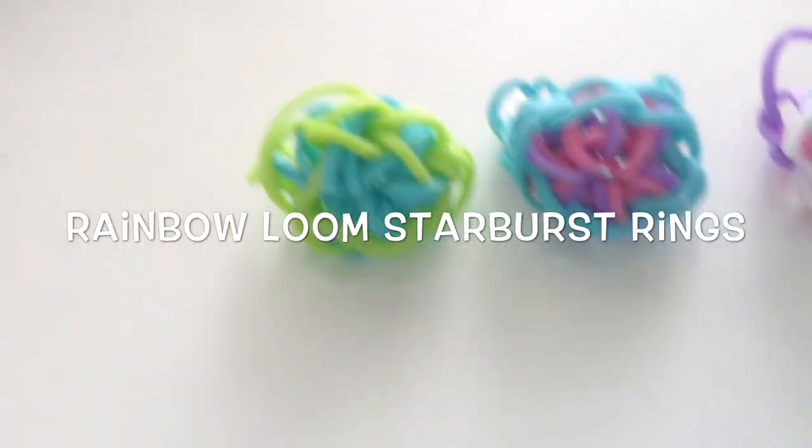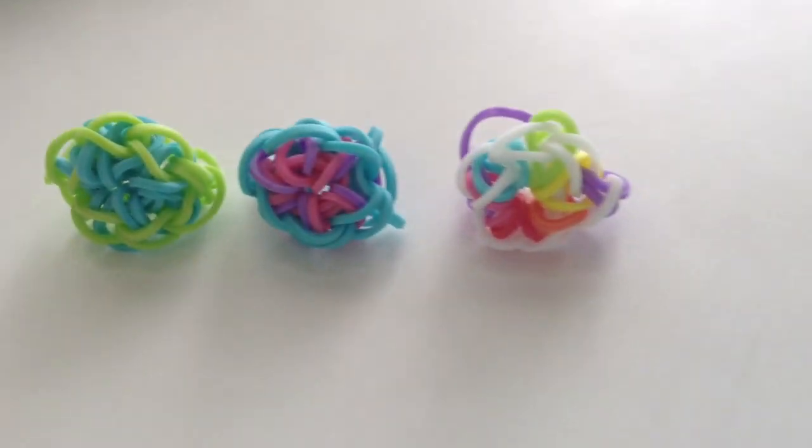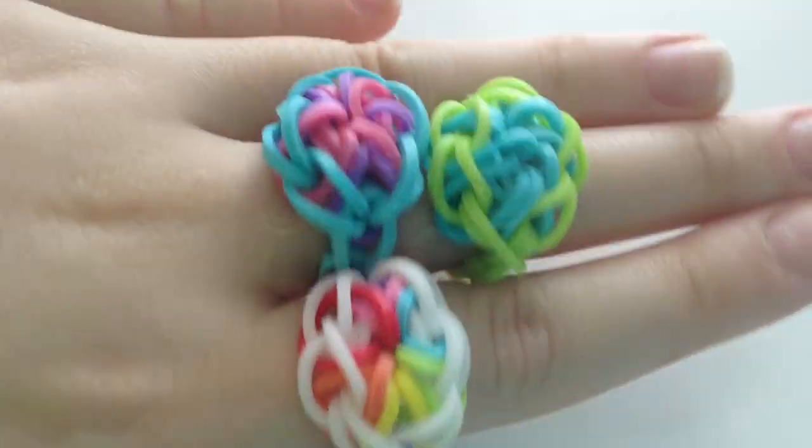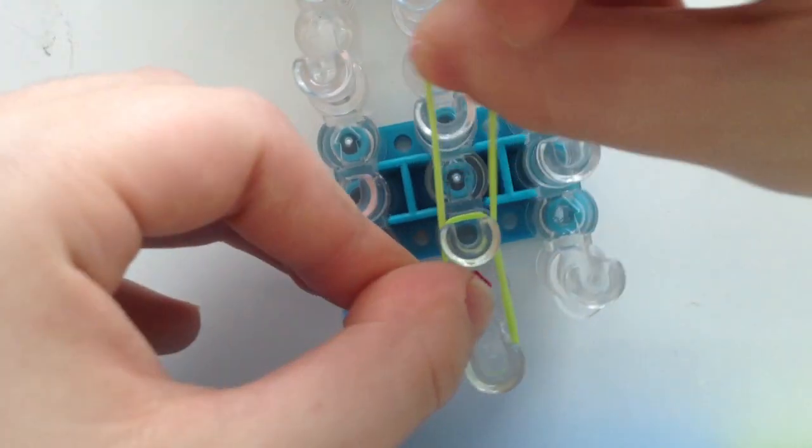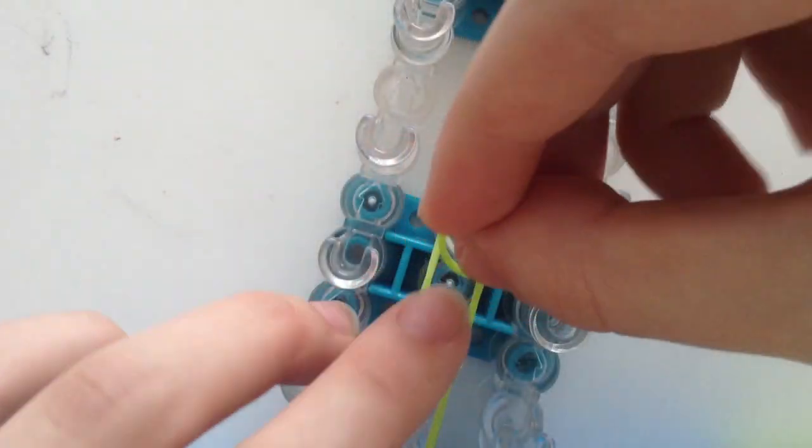Today I'm going to be showing you how to make these really easy and simple rainbow loom starburst rings. Begin with your loom facing with the red arrow up and place your first band and your second band as shown.